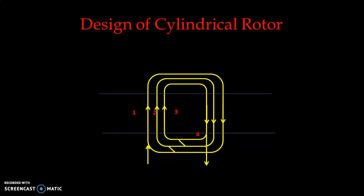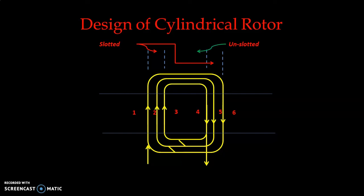In the figure, the slots are numbered one, two, three, four, five, six, showing the coil span. Part of the core is slotted and part of the core is kept unslotted. The overhang and the core sections are clearly visible. This illustrates how the rotor winding is wound in the slots. Now let us start our actual design work.